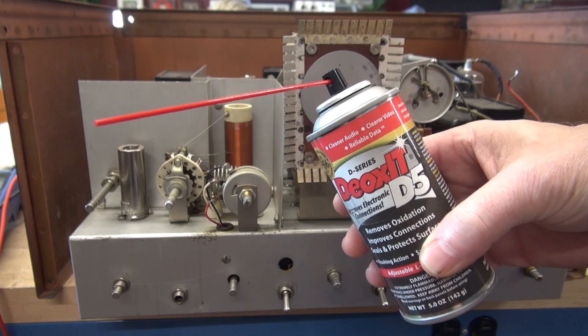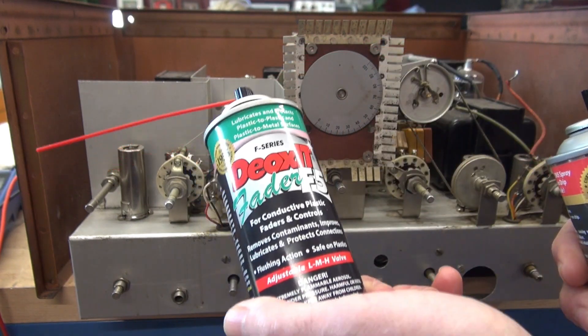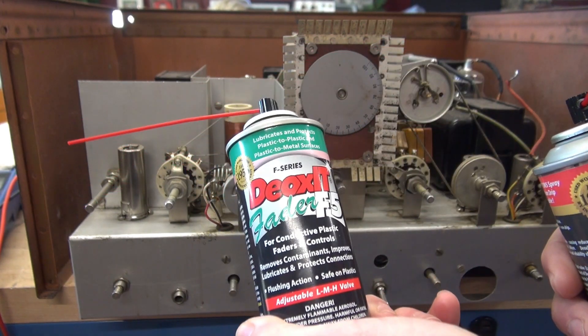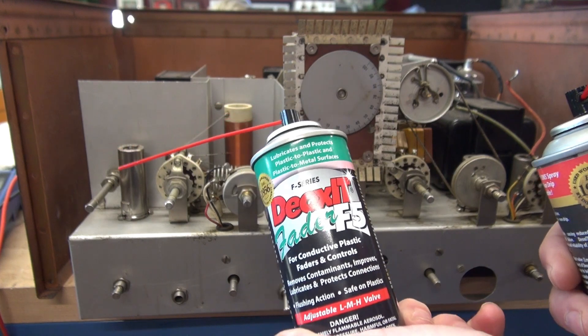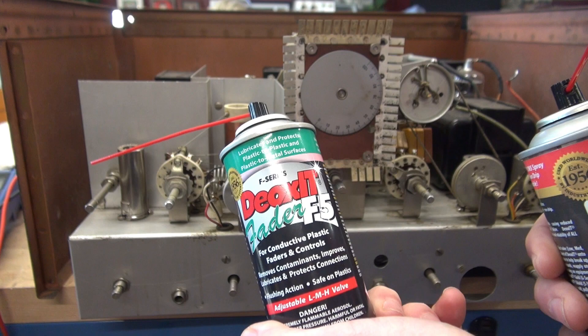This removes tarnish and lubes those type of items. But then you need the fader F5. This is for potentiometers, such as the audio control. You want to make sure not to mix these.